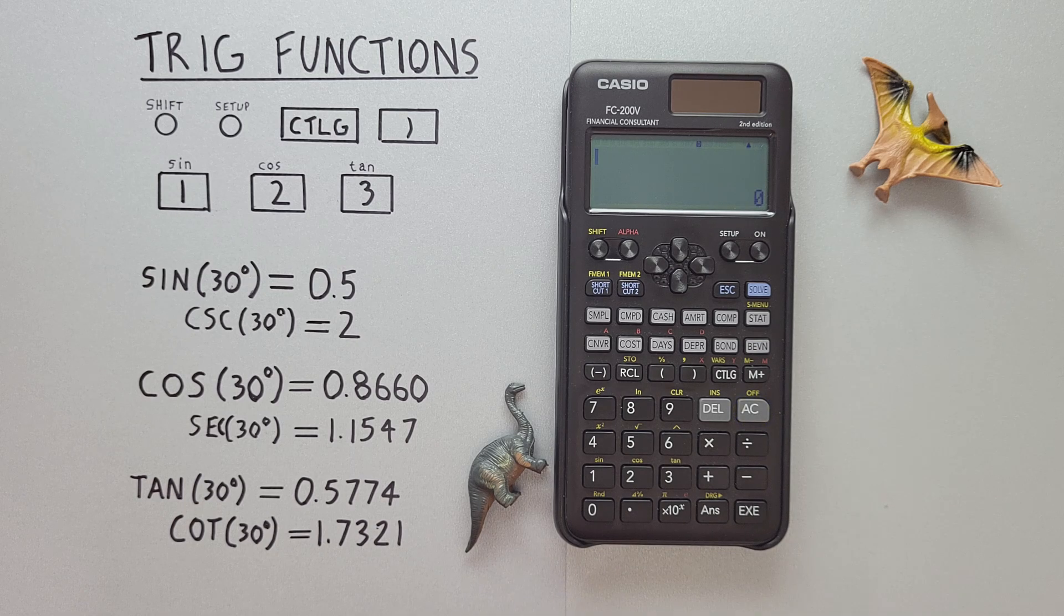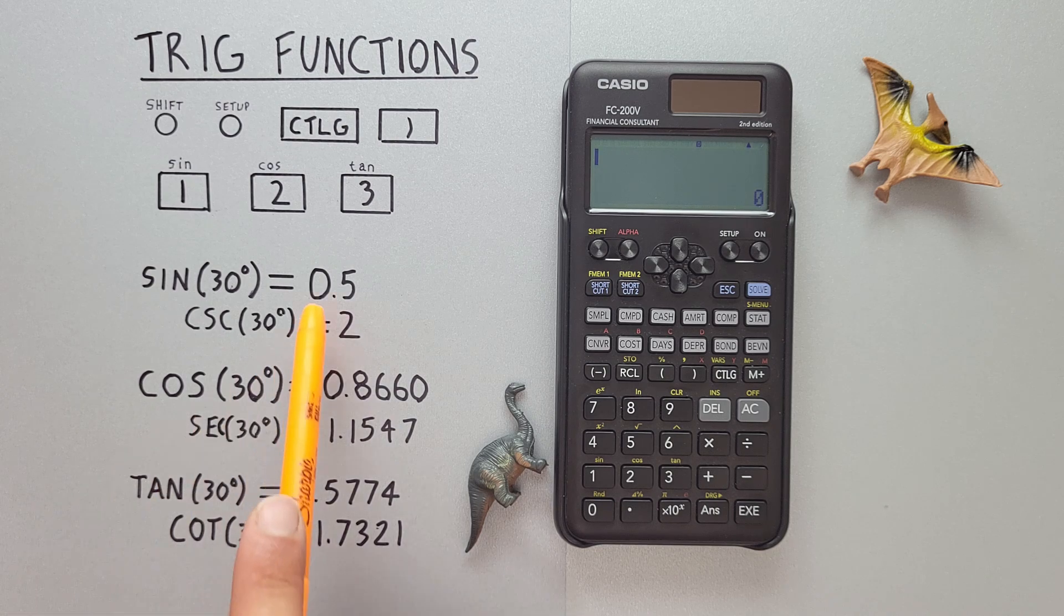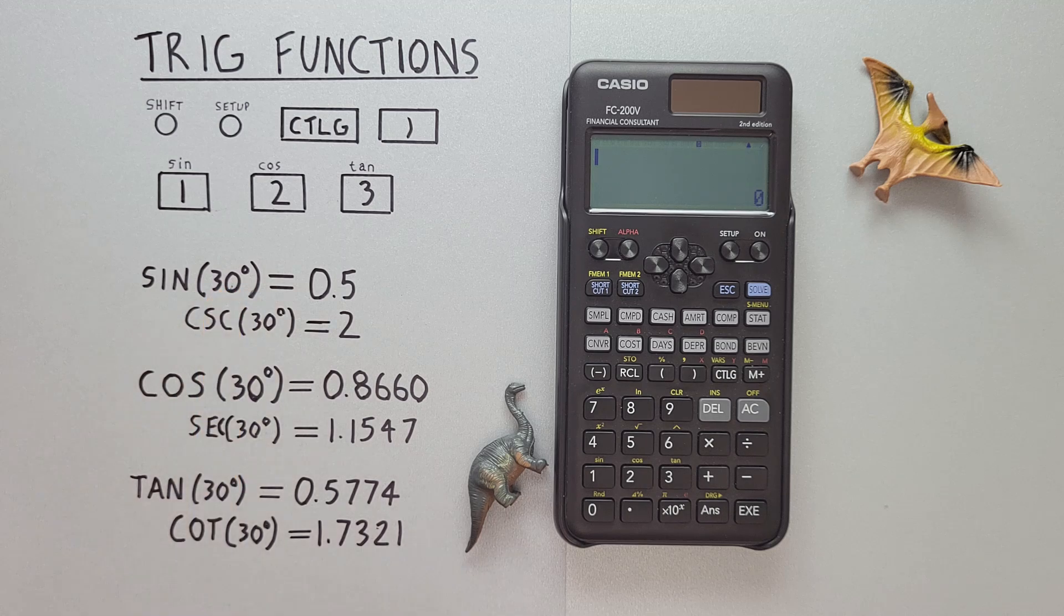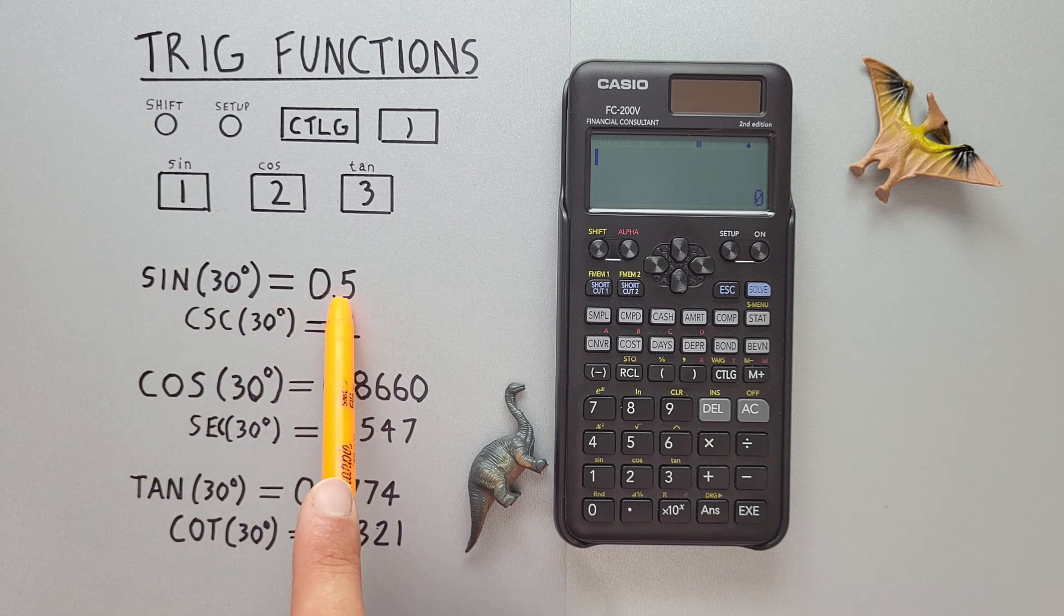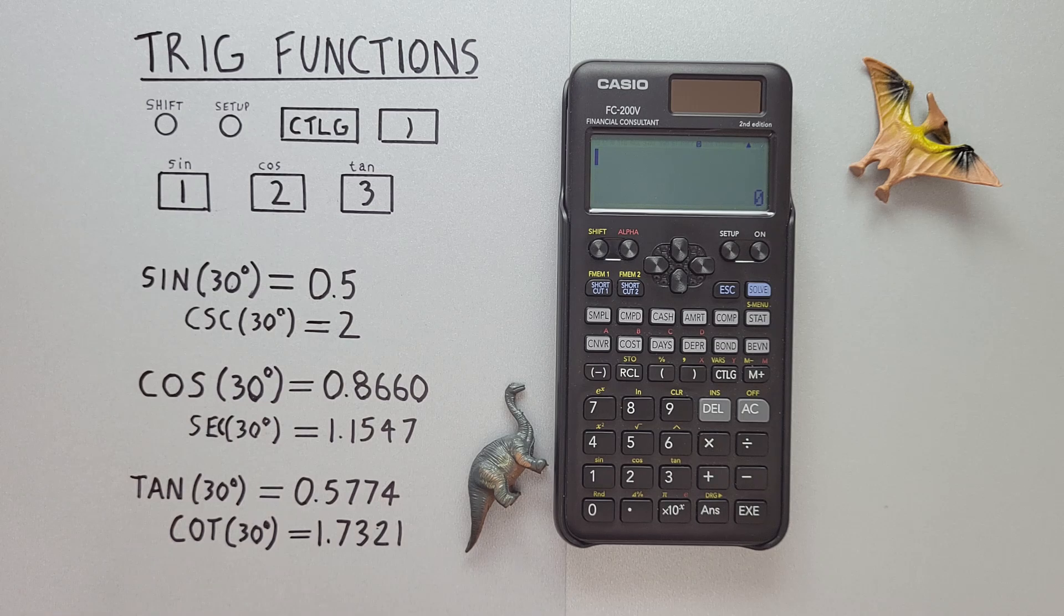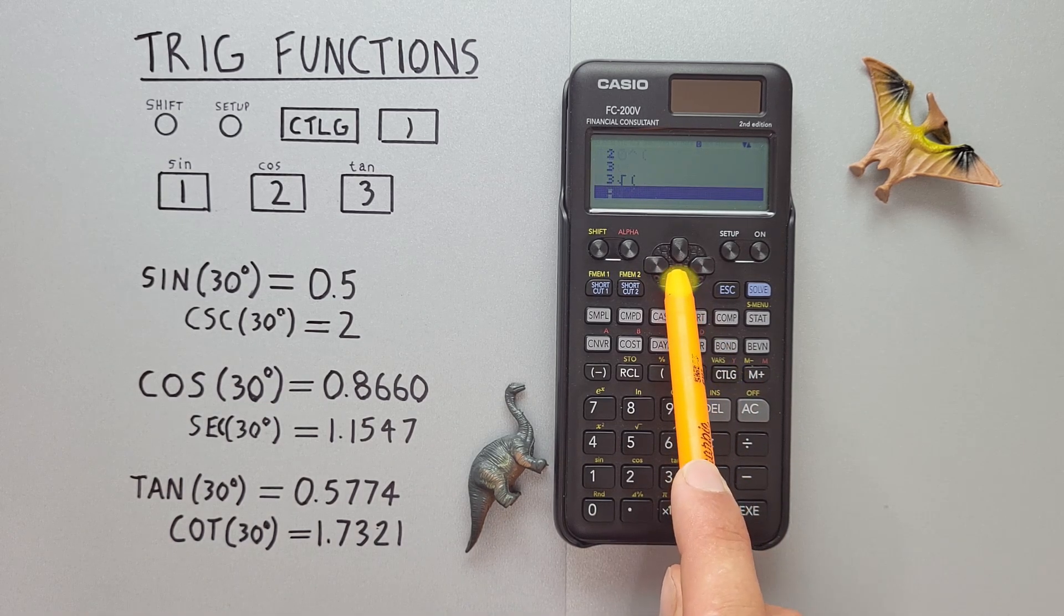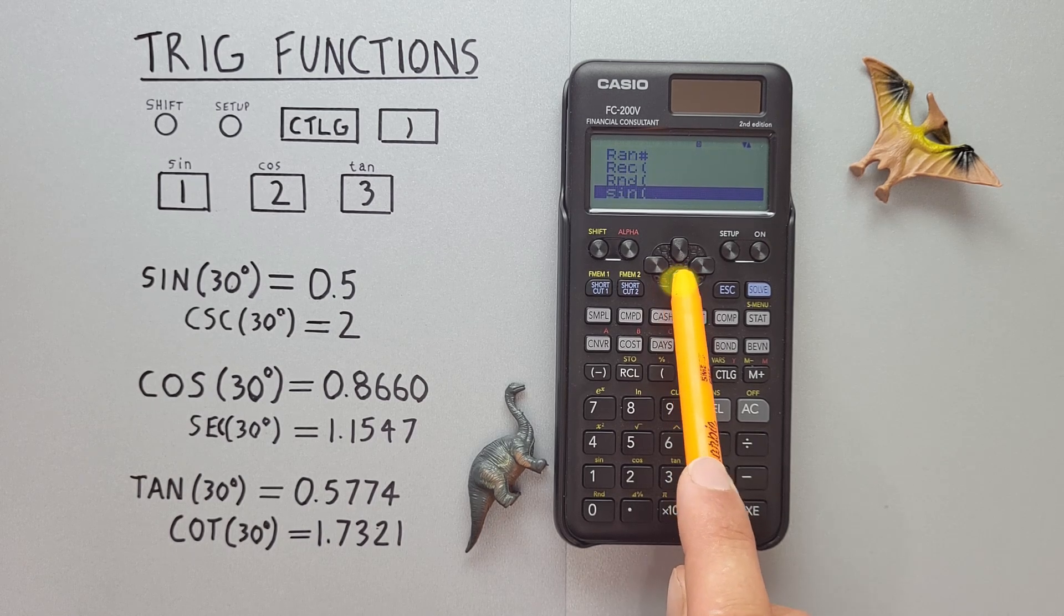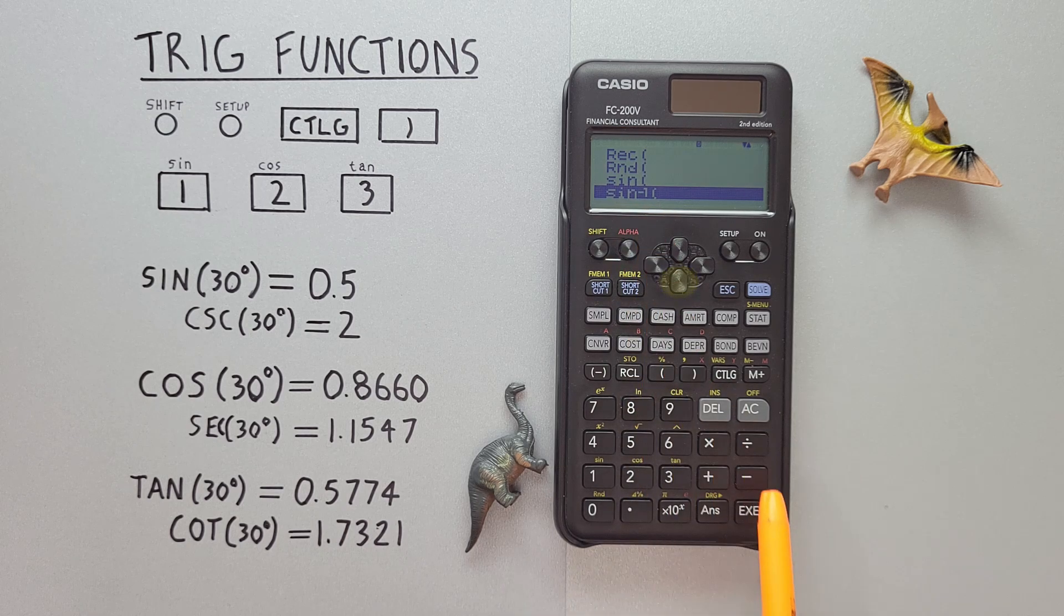What about arc sine, arc cos, and arc tan? These are used when we want to go from our result backwards and figure out how many degrees were used. So for example, if we wanted to do arc sine of 0.5, what we do is go to the catalog key and scroll down all the way until we see sine minus 1. Select that.